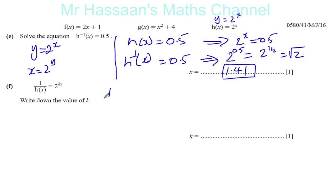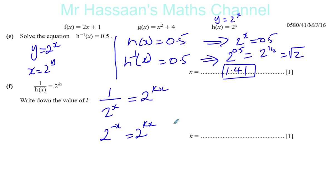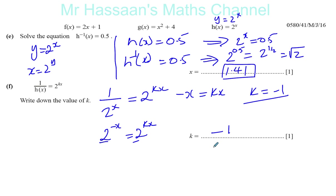Finally, part f: 1 over h(x) equals 2 to the power of kx — write down the value of k. Rewriting 1 over 2 to the power of x gives 2 to the power of negative x, and this equals 2 to the power of kx. Since the bases are the same, the powers must be equal: negative x equals kx. Dividing both sides by x gives k equals negative 1. That's the value of k, and that completes question 8 from May/June 2016, Paper 4, Variant 1.